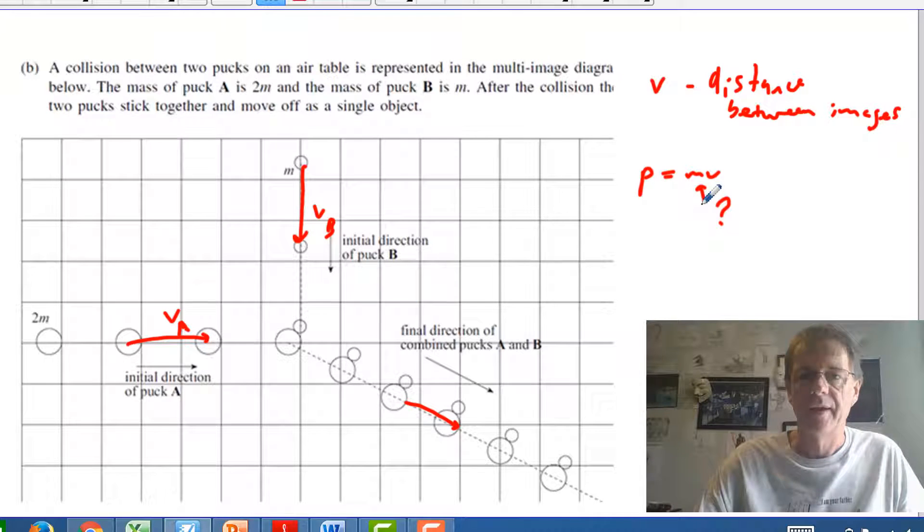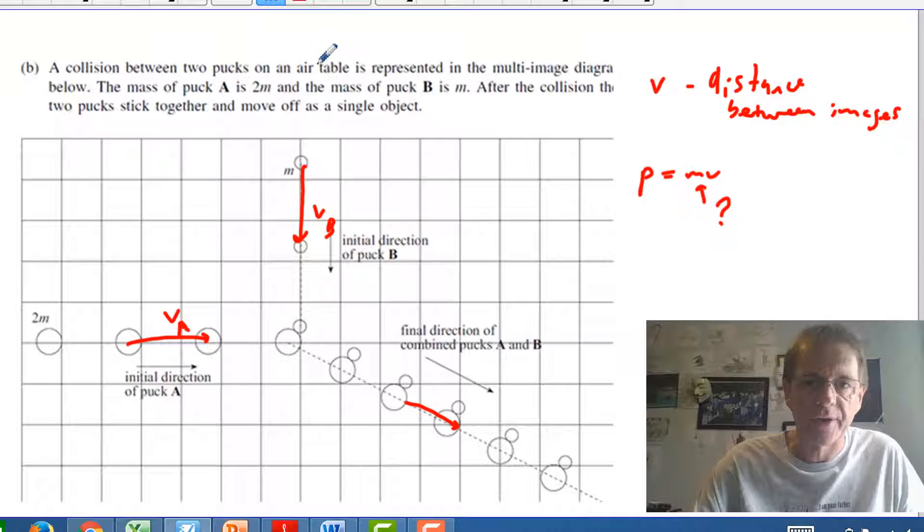How do you change these velocity vectors into momentum vectors? You really need to consider the mass. Now all the questions you're going to get here pretty much should be just multiples of one particular mass. If you look at the example here, the mass of puck A is 2m, the mass of puck B is m so one is a multiple of two times the other.